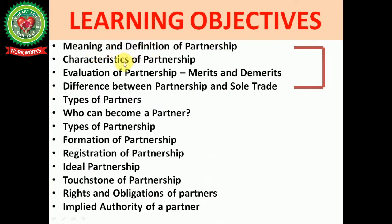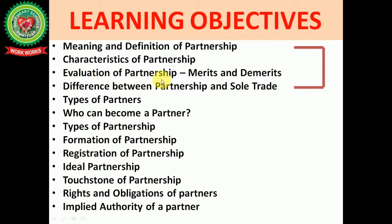The learning objectives of this chapter are to understand the meaning and definition of partnership, characteristics of partnership, evaluation of partnership, its merits and demerits, difference between partnership and sole trade business, types of partners, who can become a partner, types of partnership, formation and registration of partnership, ideal partnership, touchstone of partnership, rights and obligations of partners, and implied authority of a partner. Today we will discuss the first four topics.